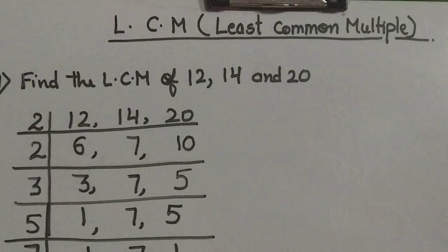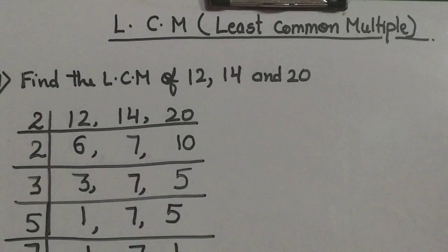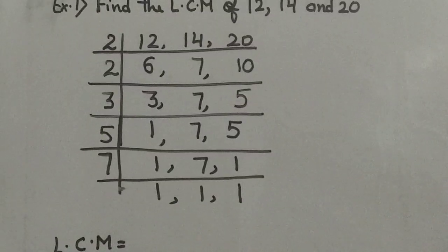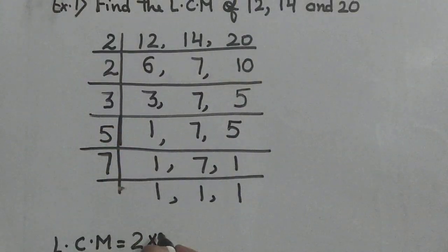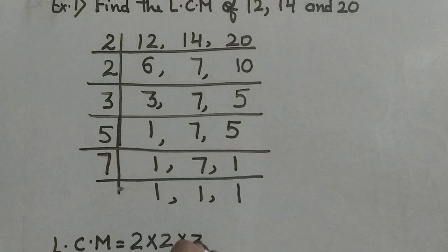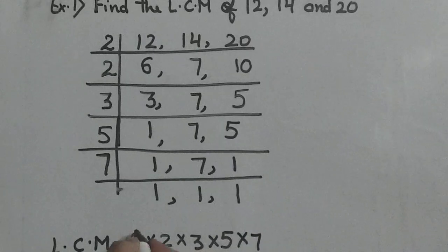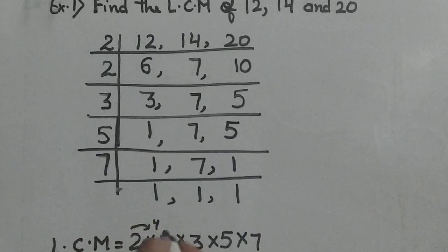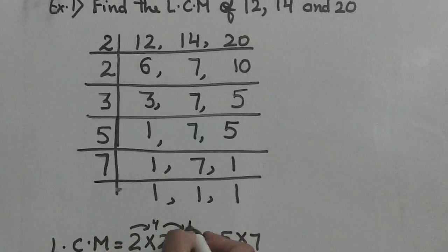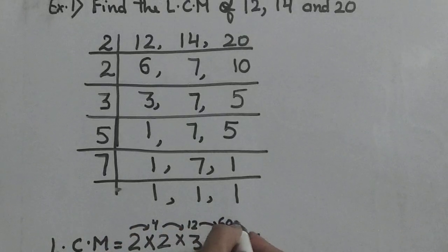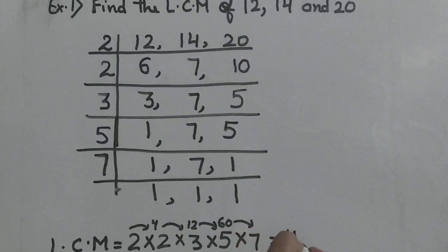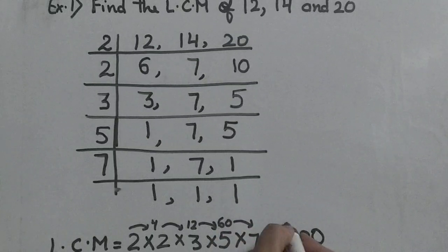The factors are: 2 multiplied by 2, multiplied by 3, multiplied by 5, multiplied by 7. So: 2 times 2 is 4; 4 times 3 is 12; 12 fives are 60; 60 times 7 is 420. So our LCM is 420. I hope you understand how to find out the LCM.